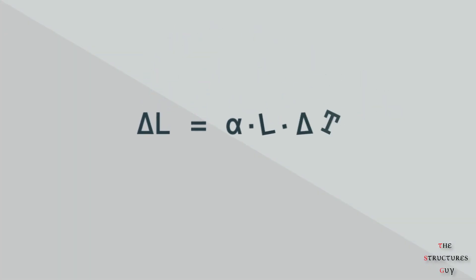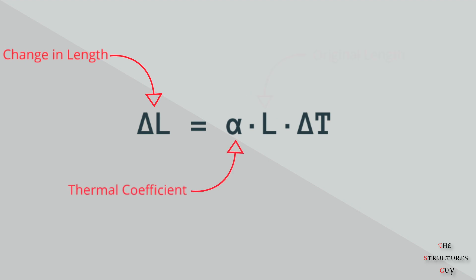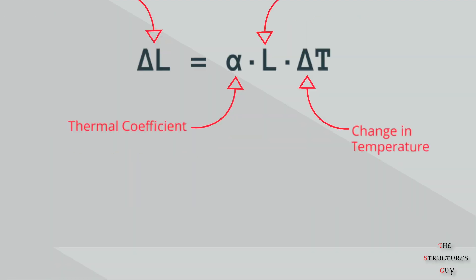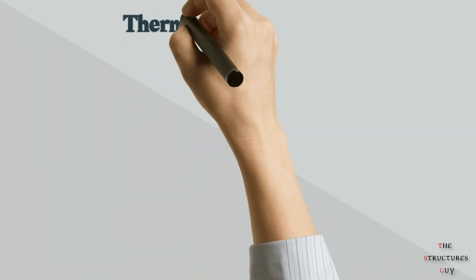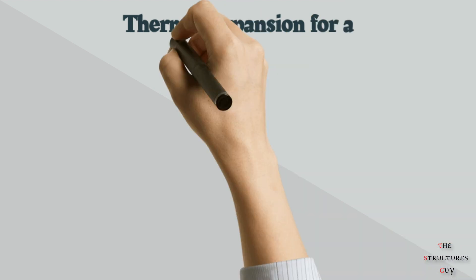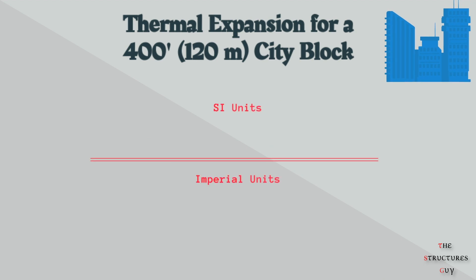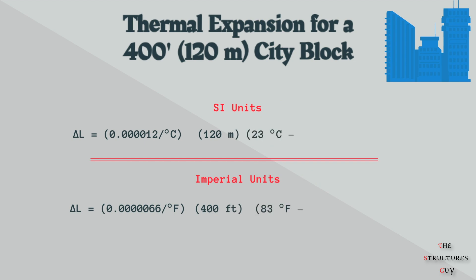Thermal expansion is given by this simple equation. Delta L is the change in length, alpha is the thermal coefficient of the material, L is the original length, and delta T is the change in temperature. A good example of this is the city sidewalk. Looking back at the equation, we can plug in values for a very typical situation with a temperature fluctuation between summer and winter. If we enter the thermal expansion coefficient for concrete, the average length of a city block, and the average high and low temperatures in a given year,